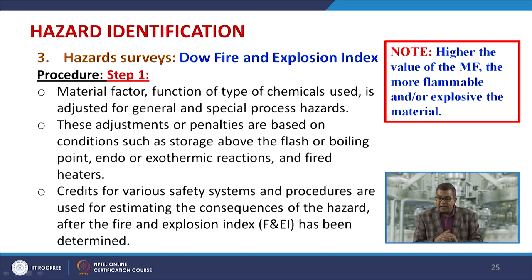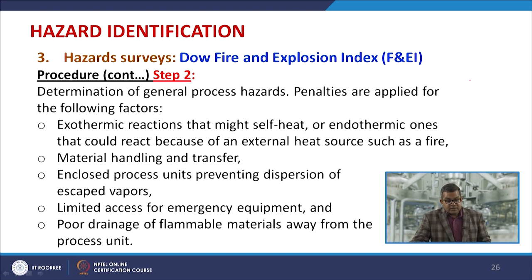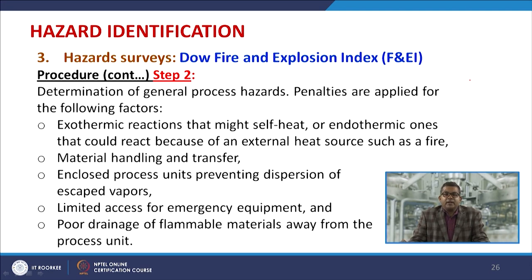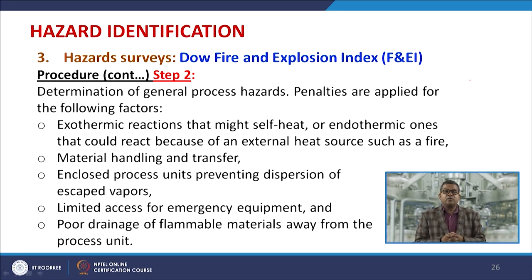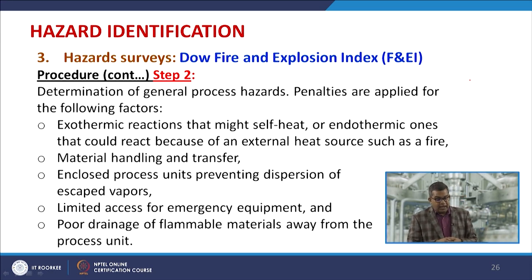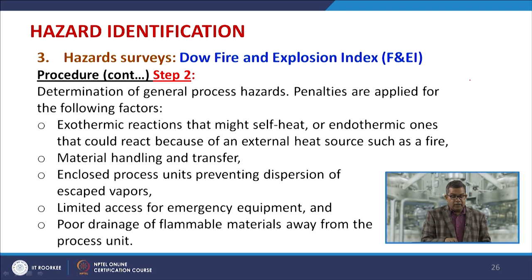Adjustments or penalties for the material factor are based on conditions such as storage above flash or boiling point, endo- or exothermic reactions, and fired heaters. Credits for safety systems and procedures are used for estimating consequences after the Fire and Explosion Index is determined. Higher MF values indicate more flammable and explosive material. The second step is determination of general process hazards, with penalties applied for factors like exothermic reactions, endothermic reactions due to external heat sources, material handling and transfer, enclosed process units preventing dispersion of escaped vapours, limited access for emergency equipment, and poor drainage of flammable material away from process units.